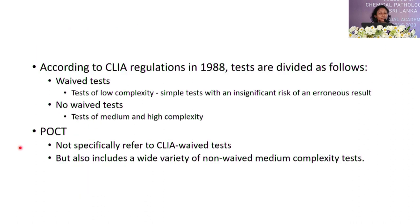According to CLIA regulation in 1988, tests are divided into two categories: waived tests and non-waived tests. Waived tests are low-complexity tests which do not pose significant risk if an erroneous result occurs. Non-waived tests are medium or high complexity tests. POCT does not specifically refer to CLIA waived tests, but it can include non-waived medium complexity tests.